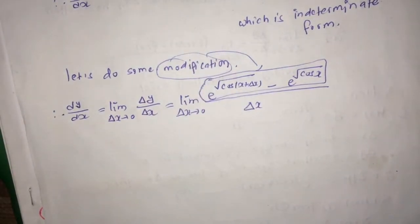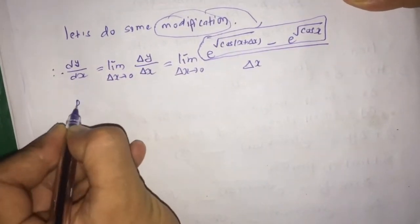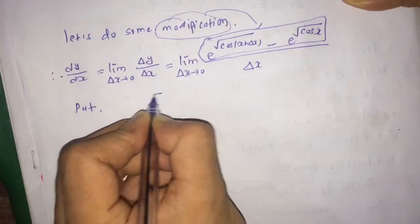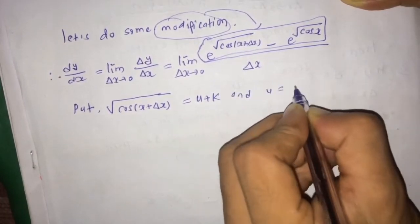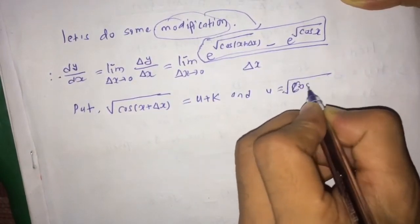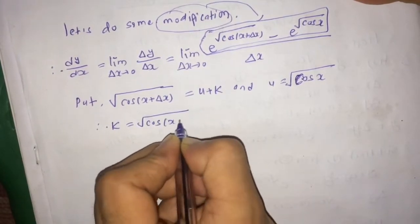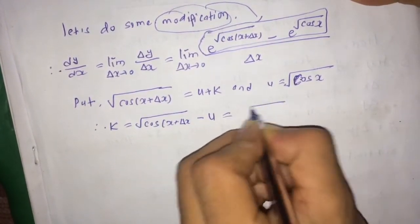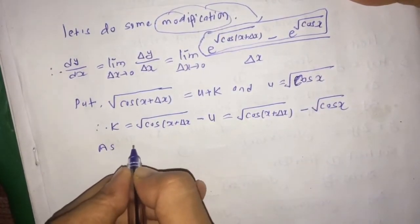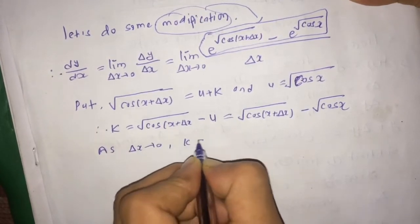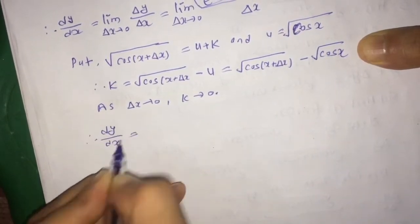We rewrite dy/dx as the limit δx tends to 0 of exponential root under cos(x + δx) minus exponential root under cos x, whole divided by δx. For the modification, we put root under cos(x + δx) equal to u + k, and u is equal to root under cos x. So we get k equal to root under cos(x + δx) minus u, and substituting the value of u, k equals root under cos(x + δx) minus root under cos x.